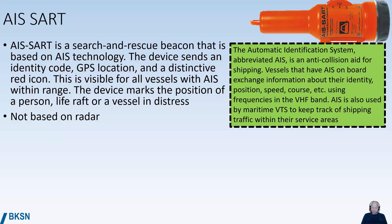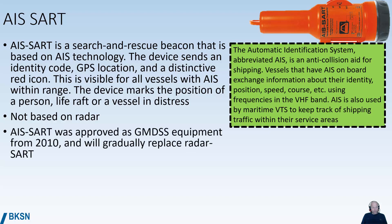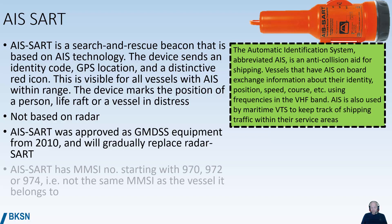Unlike radar SART, AIS SART is not based on radar. It was approved as GMDSS equipment from 2010, and is expected to eventually replace the radar SART. AIS SART uses an MMSI number that starts with 970, 972, or 974, meaning it is not the same MMSI number as the vessel the SART belongs to.